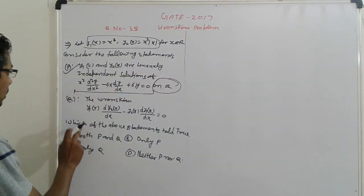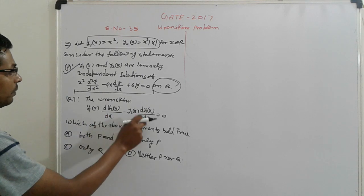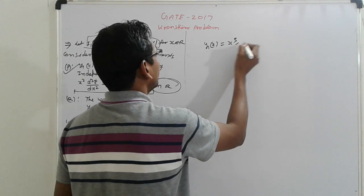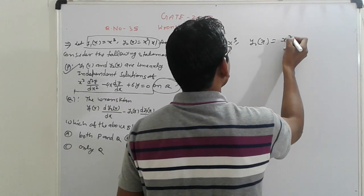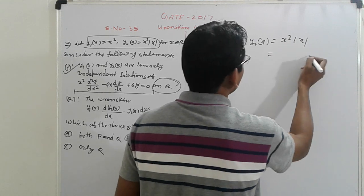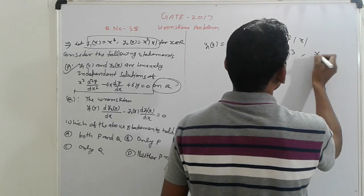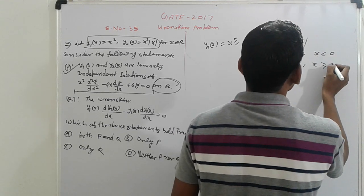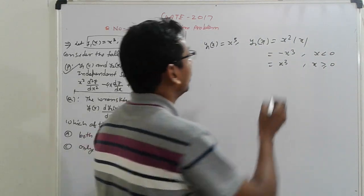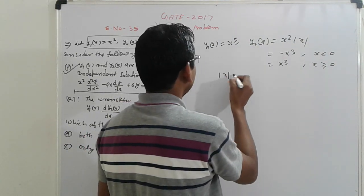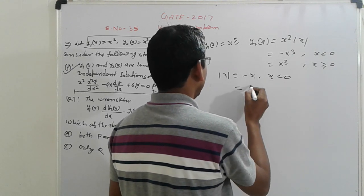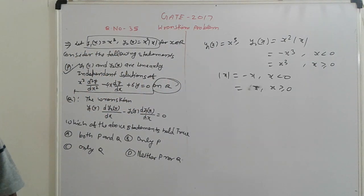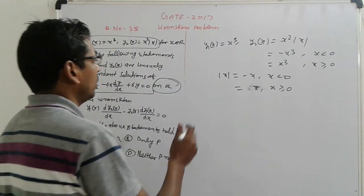Next, Y1 and Y2 dX. Y1 of X is given X³. Y2 of X equals given X²mod(X). So which has 2 possibilities: minus X³ when X is less than 0, and X³ when X is greater than or equal to 0. Two possibilities. Because mod of X = minus X for X < 0, plus X for X ≥ 0. So there are 2 possibilities.